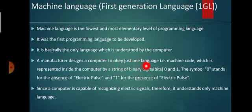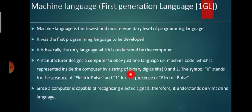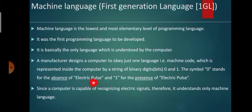When a computer is designed by a manufacturer, they design it in such a way that the computer obeys only one language — machine code — which is represented inside the computer by a string of binary digits. Binary digits represent zero and one. The symbol zero stands for the absence of electric pulse, meaning no current, and one stands for the presence of electric pulse, meaning the system is in on mode.